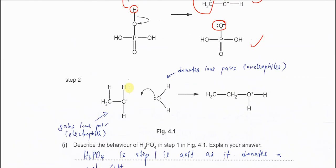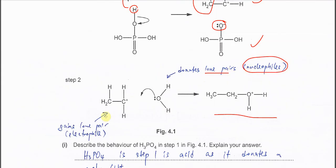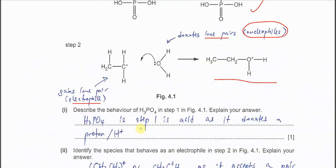Step 2: the carbocation reacts with H2O in the mixture. Oxygen in H2O has two lone pairs, and one lone pair donates to the carbocation to form a new bond, giving the intermediate. In step 2, H2O is the lone pair donor, so it is the nucleophile. The carbon cation gains the lone pair, so it is the electrophile. This allows us to answer the sub-questions.